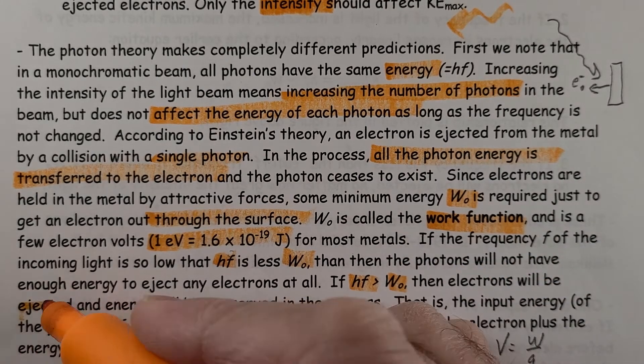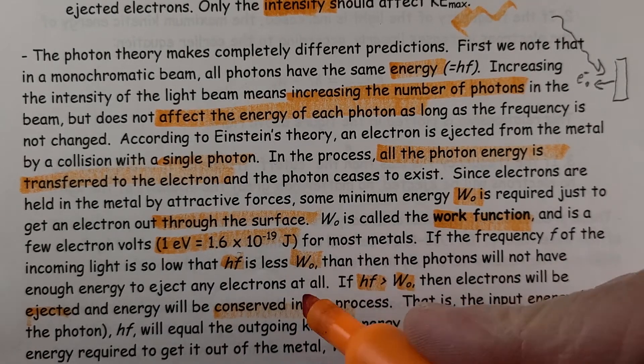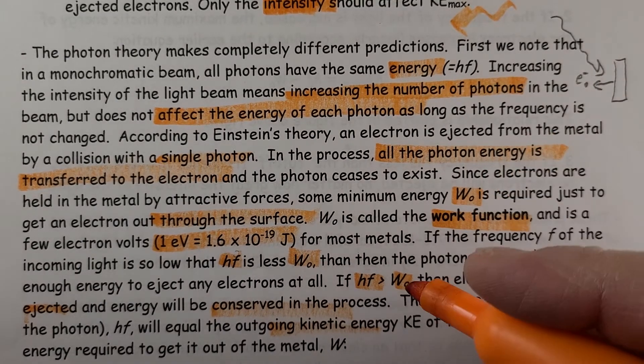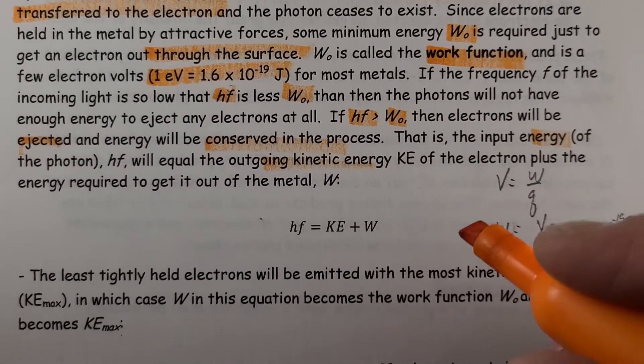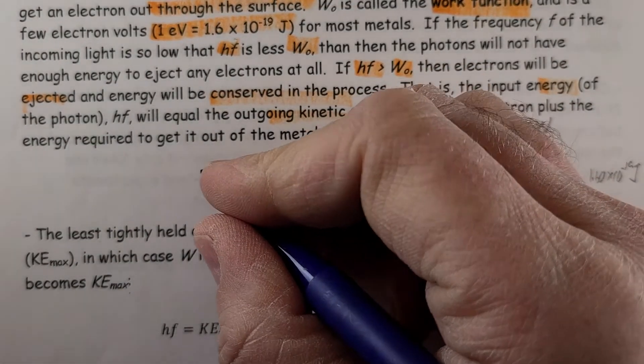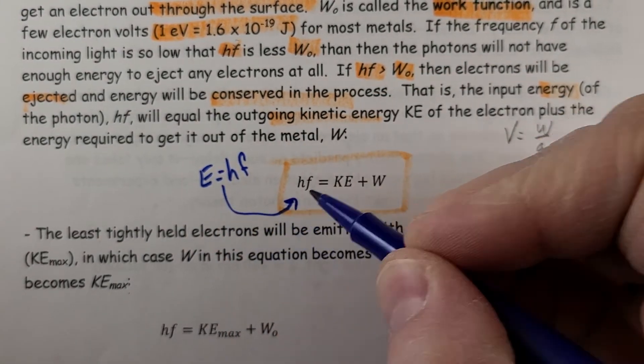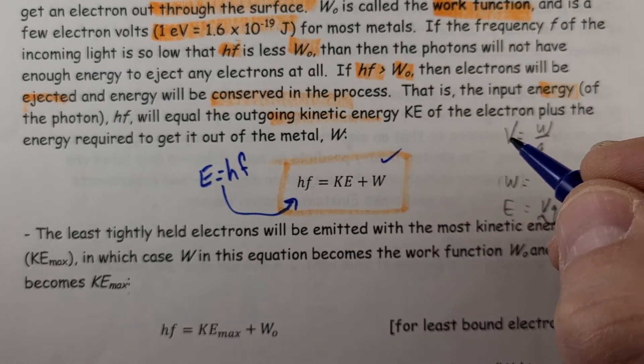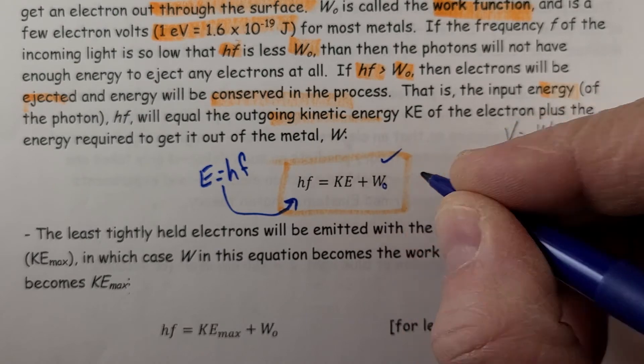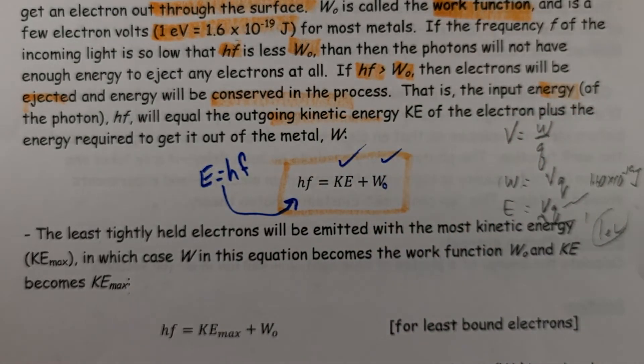That is, the input energy of the photon is equal to the outgoing kinetic energy of the electron plus the energy required to dislodge it. So here we go. So here's the entire thing. That HF is really equal to the energy of the photon. So the energy of the photon, some of it is used to dislodge the electron. So we can put W there, or WO, or W naught, to eject the electron, then to give it energy as it goes across the plate.